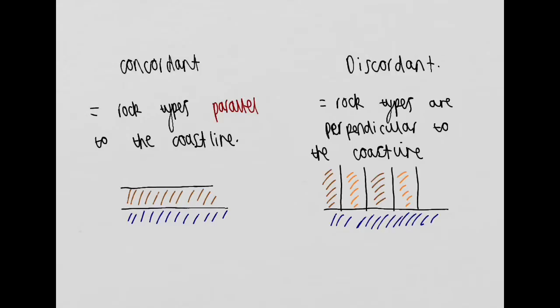The clear distinction between these two types of coastlines is that concordant coastlines have rock types that are parallel to the coastline. If we look at our diagram down here, we have our sea here, and we have a band of rock that is parallel to the coastline. This is an example of a concordant coastline.